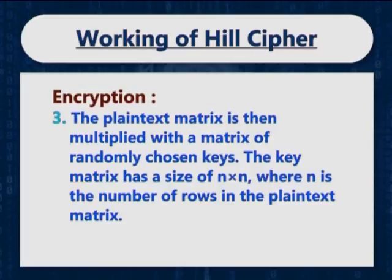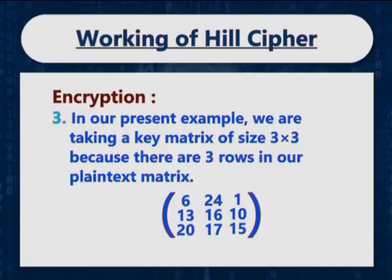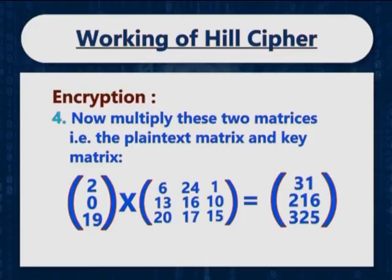The plain text matrix is then multiplied with the matrix of randomly chosen keys. The key matrix has a size of n into n, where n is the size of rows in the plain text matrix. In our present example, we are taking a key matrix of size 3 into 3 because there are 3 rows in our plain text matrix. The first row of the matrix contains 6, 24 and 1. The second and third row contains 13, 16, 10 and 20, 17 and 15 respectively. Now multiply these two matrices and after multiplication we get 31, 216 and 325 in the form of a matrix.